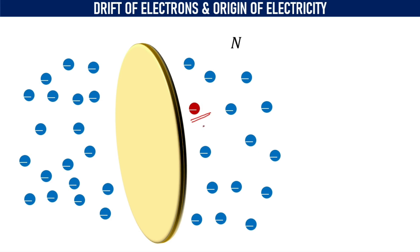it will move in a zigzag path. If we highlight the ith electron and observe its initial velocity, that means in the absence of the external electric field,